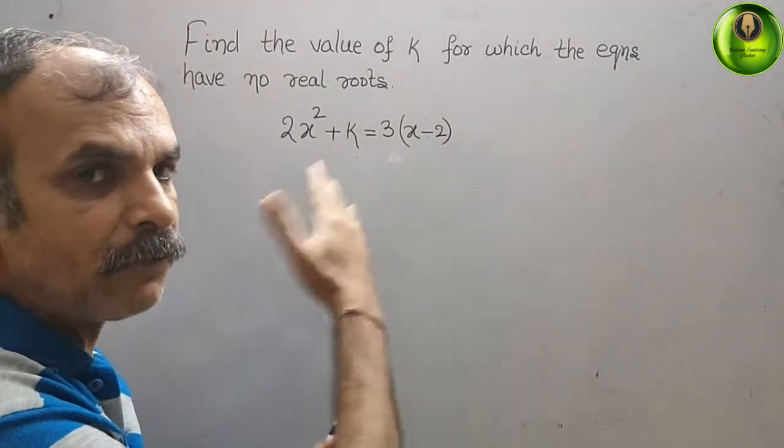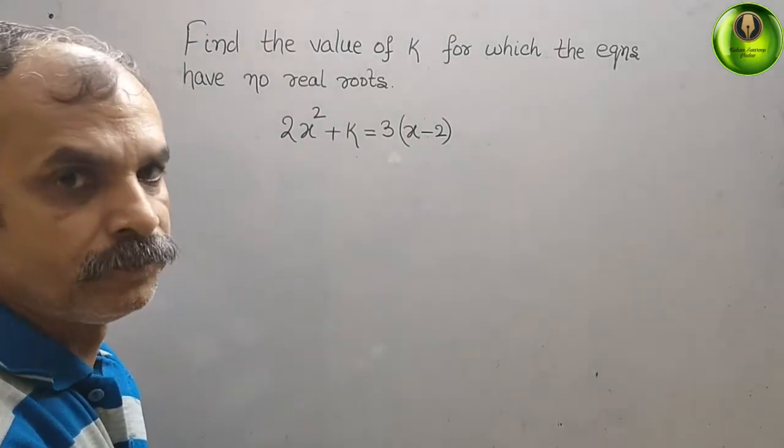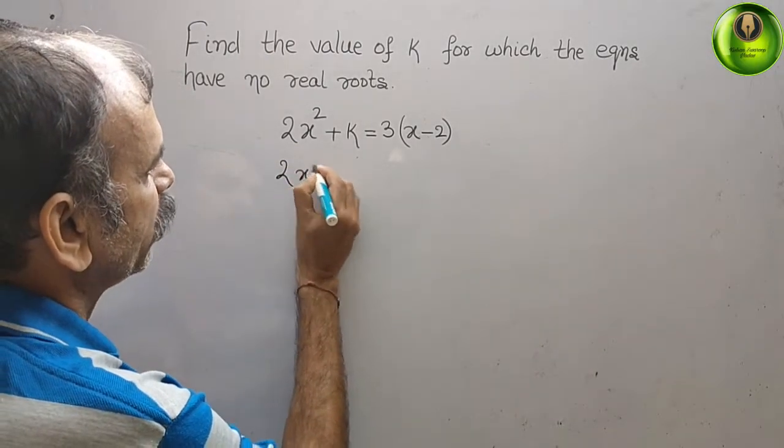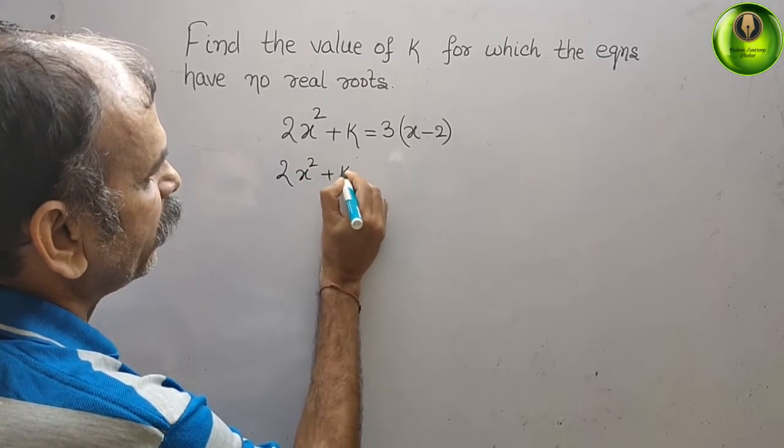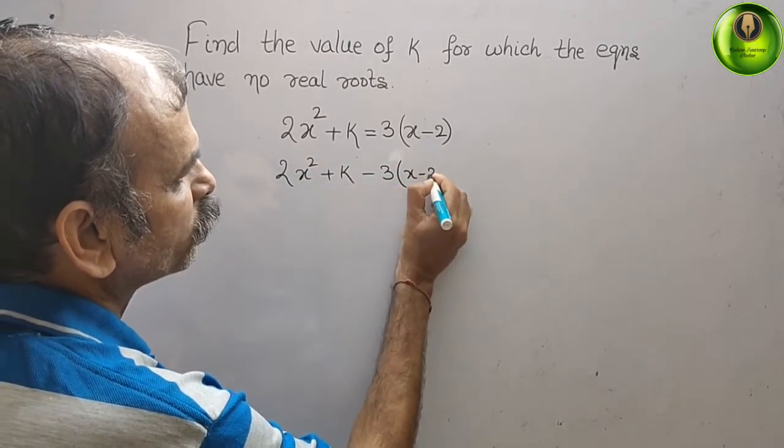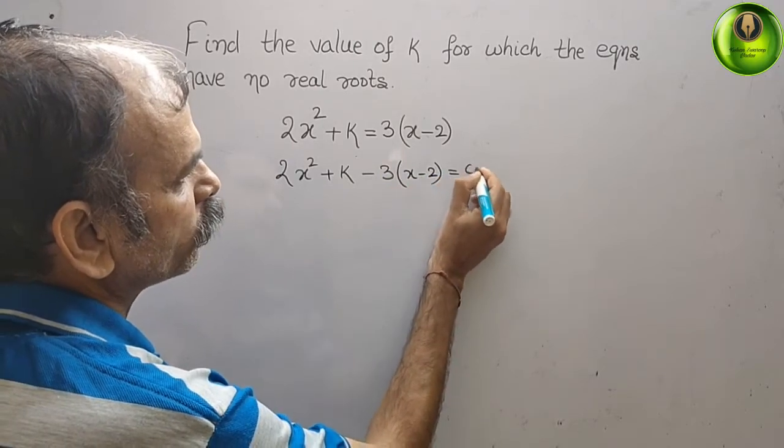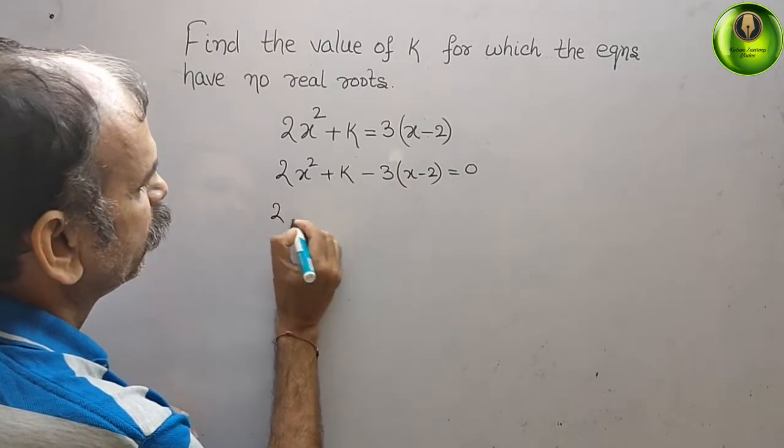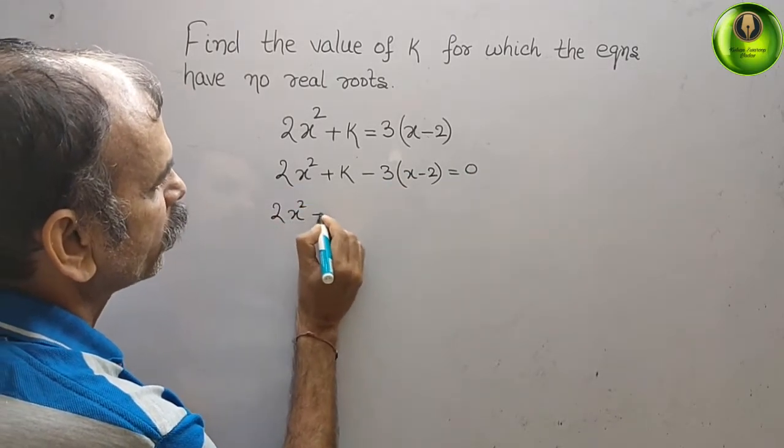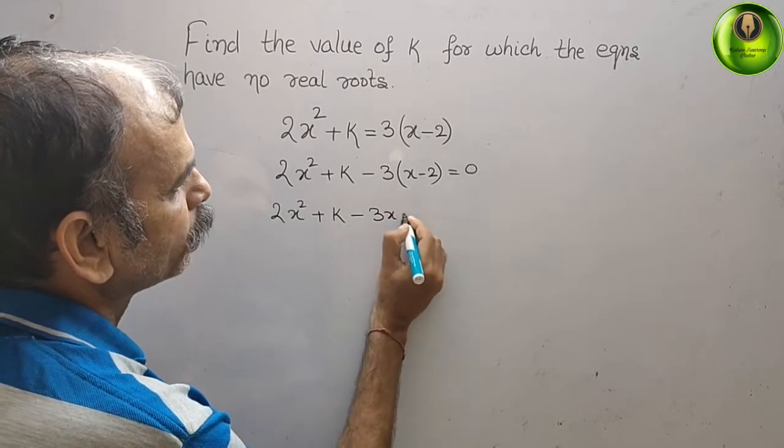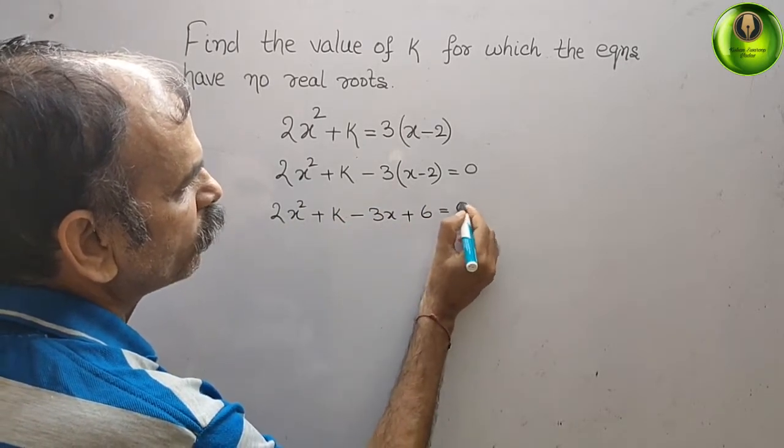It will be 2x² + k - 3(x - 2) = 0. Now solve this, you will get 2x² + k - 3x + 6 = 0.